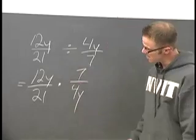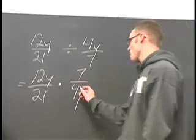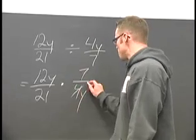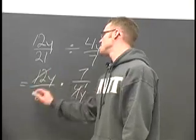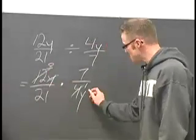At this stage we're going to simplify. 4 goes into 4 once, into 12 three times. These y's cancel.